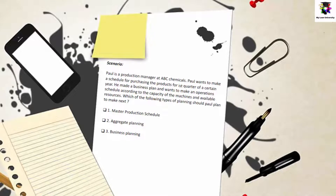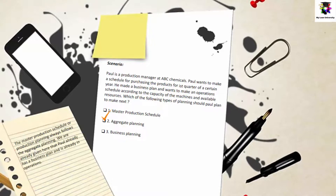The correct answer is aggregate planning. The master production schedule always follows the aggregate planning. We are already told that Paul has a business plan and is already in operations, so the next step is aggregate planning.